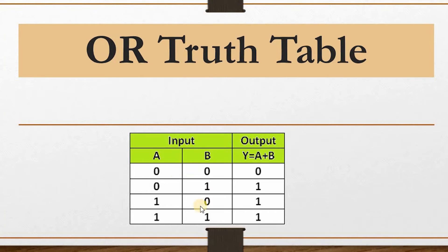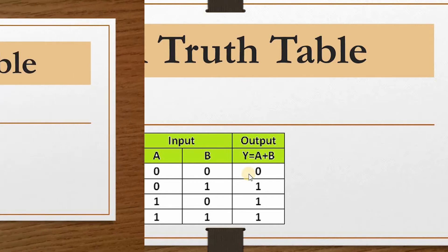For the OR gate truth table: if one of the inputs is one, the output is one. If one input is one, output is one. If both inputs are one, the output is one. But when both inputs are zero — A is zero and B is zero — the output would be zero. Make sure you are clear about this.